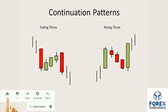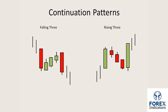Conversely, we have the rising three where the market is in an uptrend. A green candle is printed where the bulls are buying into the market pushing it up. Then the sellers come in and try to push the market back down, and all three candles are contained within that initial bullish candle. After that third candle is printed, the bulls come back in with a more concerted push. The close of the final bullish candle is above the close of the initial bullish candle and the market continues in its uptrend.